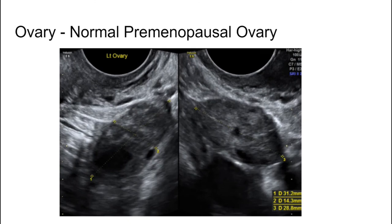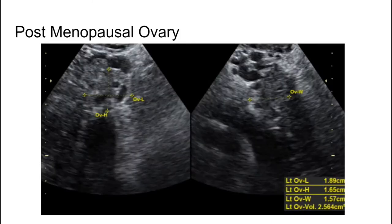Here we have an ultrasound of a normal pre-menopausal ovary — the grey area marked out by the markers. You can see a corpus luteum or follicle here, and smaller developing follicles that will ovulate in coming months. The post-menopausal ovary is much smaller and more difficult to see. It doesn't have those clear obvious follicles because it's not as active — less blood supply and not undergoing ovulatory changes.